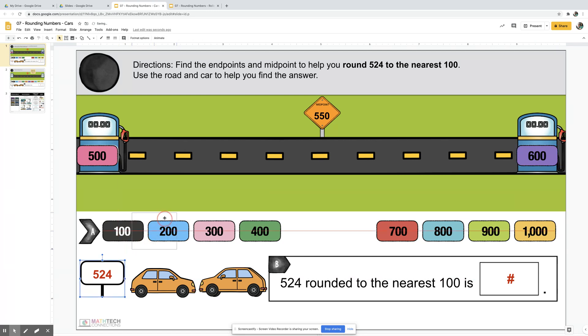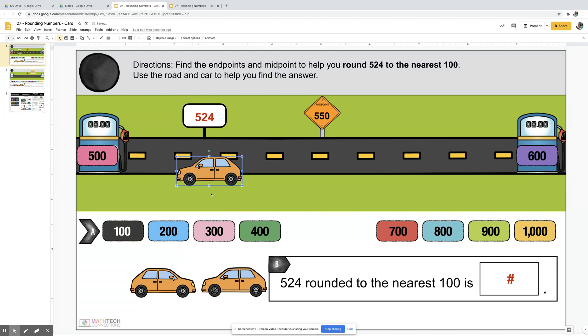So this is 540, 530, 520, somewhere around here. They can use the little car – will 524 round to 500 or 600? It is closer to 500, so if this car is running low on gas, it's going to go to the closer gas station.